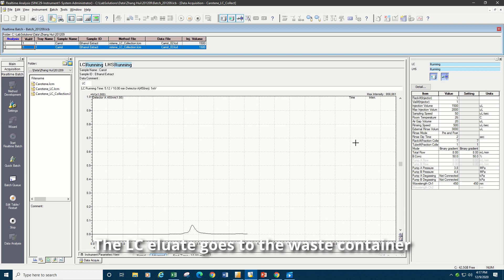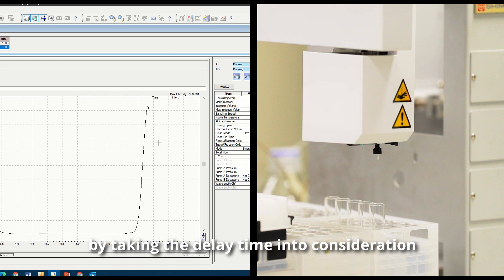The LC eluent goes to the waste container when a fraction collection signal is not triggered. Otherwise, the LC eluent goes to proper containers, such as test tubes in the rack. In this analysis, when the fraction collection signal is triggered by the level and slope, the LH40 automatically starts to collect carotene by taking the delay time into consideration.